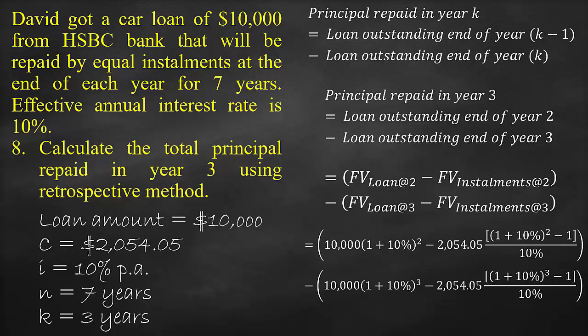Minus open bracket of the loan amount of $10,000 multiplied by open bracket (1 plus the interest rate of 10%) close bracket, to the power of the number of paid periods, which is 3 years, minus the periodic instalment of $2,054.05 multiplied by open bracket (1 plus the interest rate of 10%) close bracket, to the power of 3 minus 1, close the first bracket, all divided by the interest rate of 10%, close bracket.